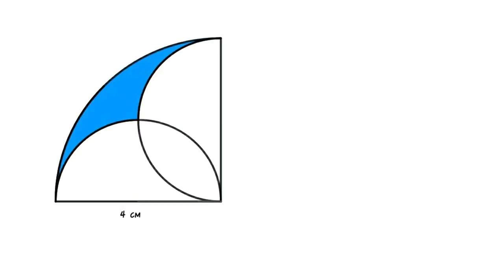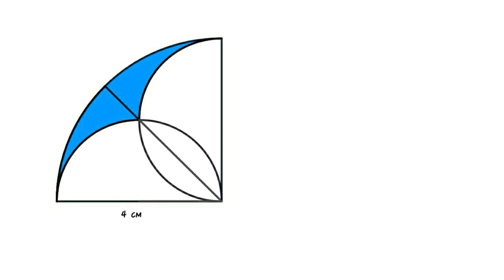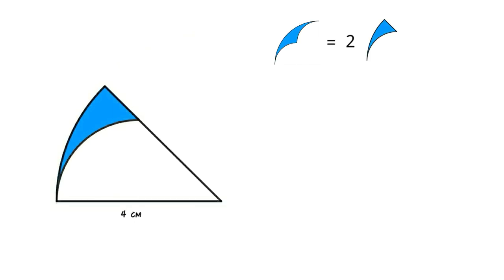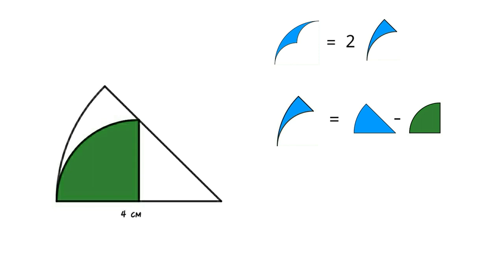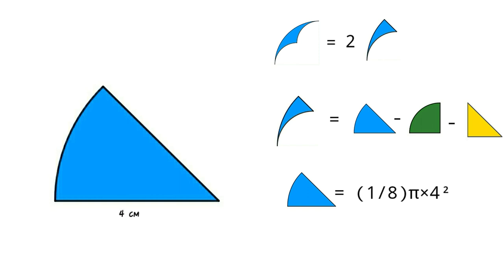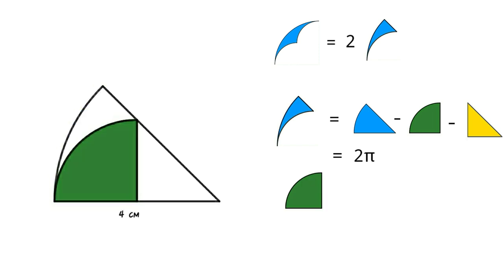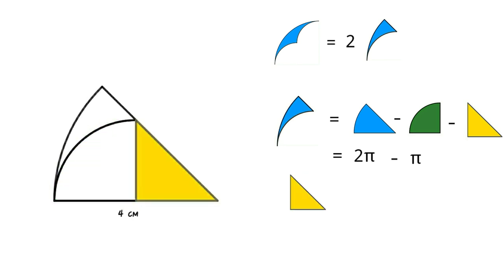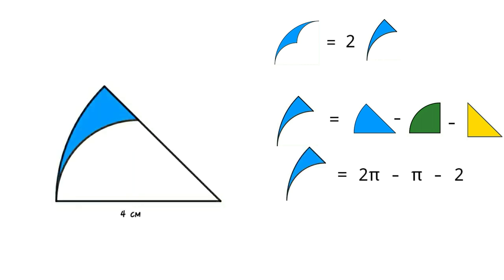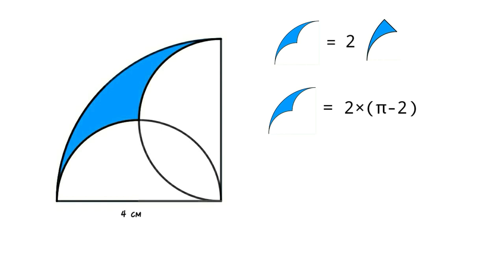Method 7: Divide the quarter circle into two equal sectors. Area of blue region equals 2 × area of this blue sub-region. Area of this blue sub-region equals area of sector minus area of quarter circle minus area of triangle. Area of sector = (1/8) × π × 4² = 2π; area of quarter circle = (1/4) × π × 2² = π; area of triangle = (1/2)(2)(2) = 2. So this blue sub-region equals 2π − π − 2 = π − 2, and total area of blue region equals 2(π − 2) = 2π − 4 cm².